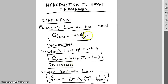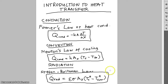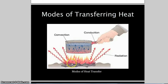For conduction and convection equations, you can use either Celsius or Kelvin for temperature. But for the Stefan-Boltzmann equation, you must use Kelvin. The safest approach for all these equations is to always use Kelvin — this avoids mistakes, especially during exams. Many students make this error. So if you're given Celsius, Fahrenheit, or Rankine, convert everything to Kelvin.